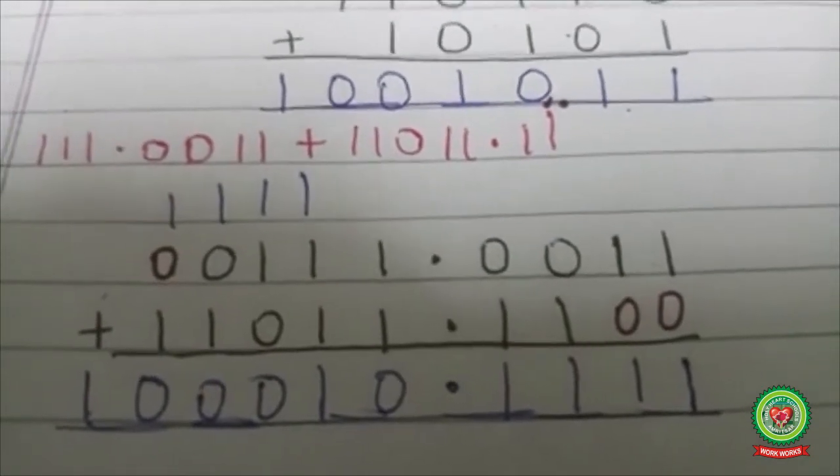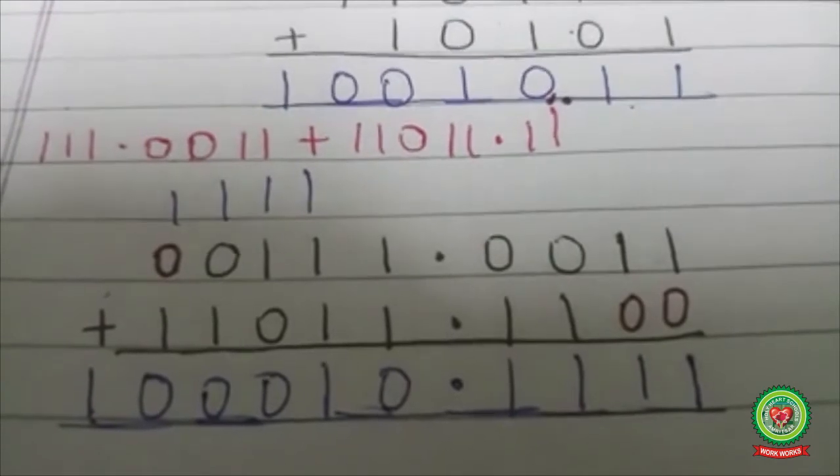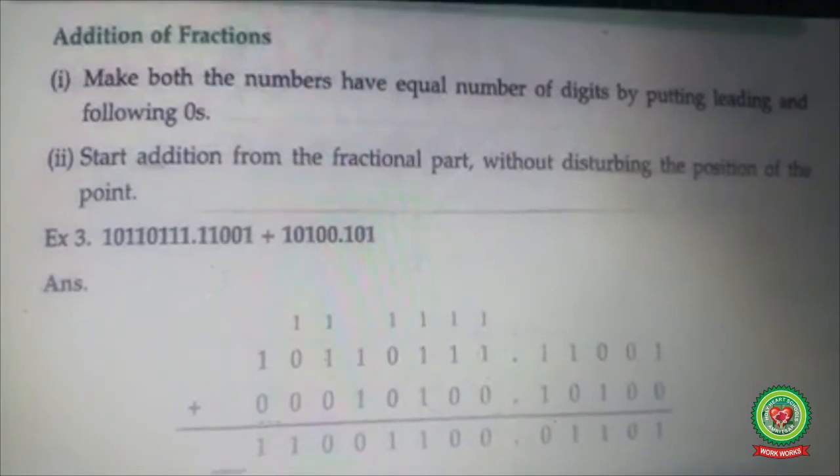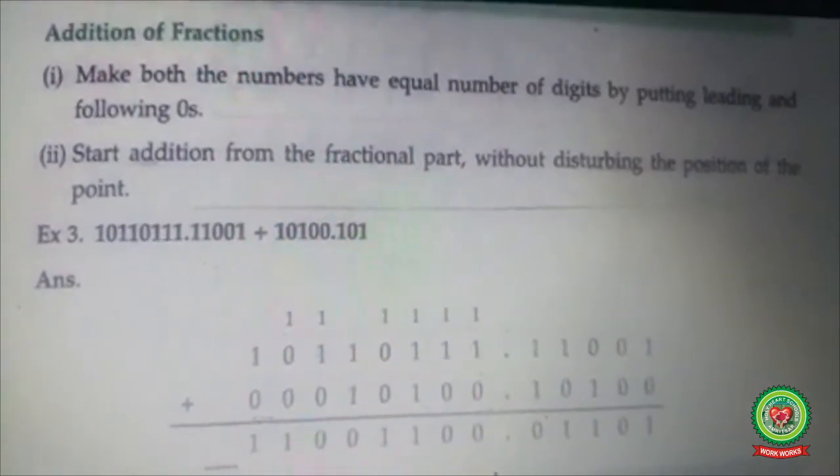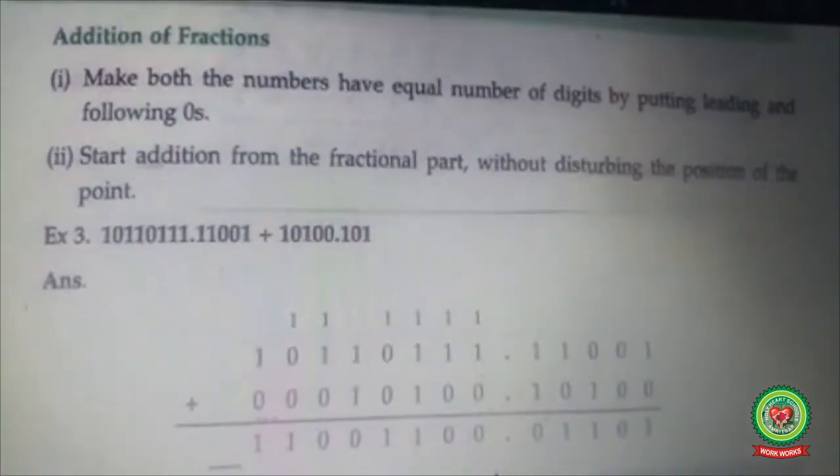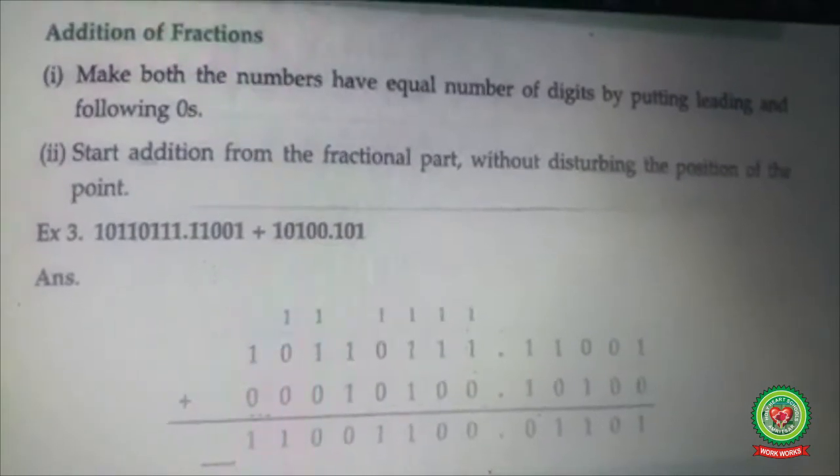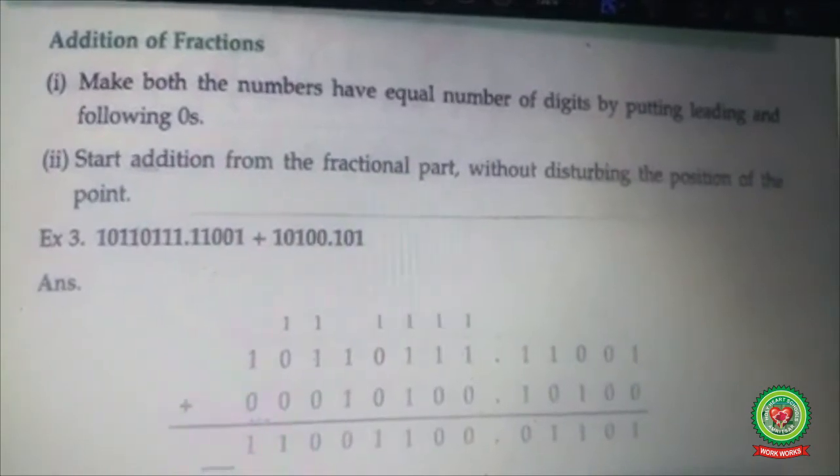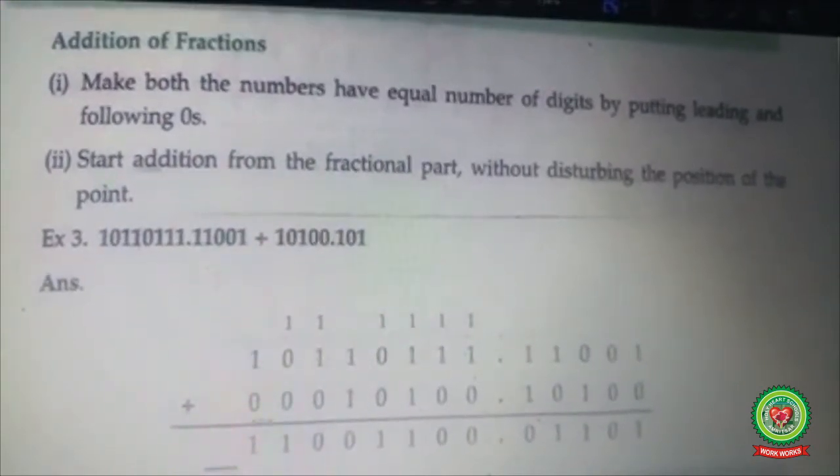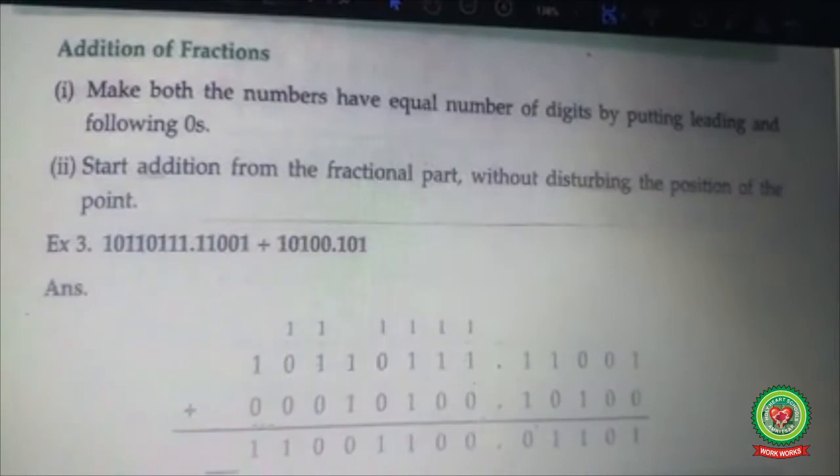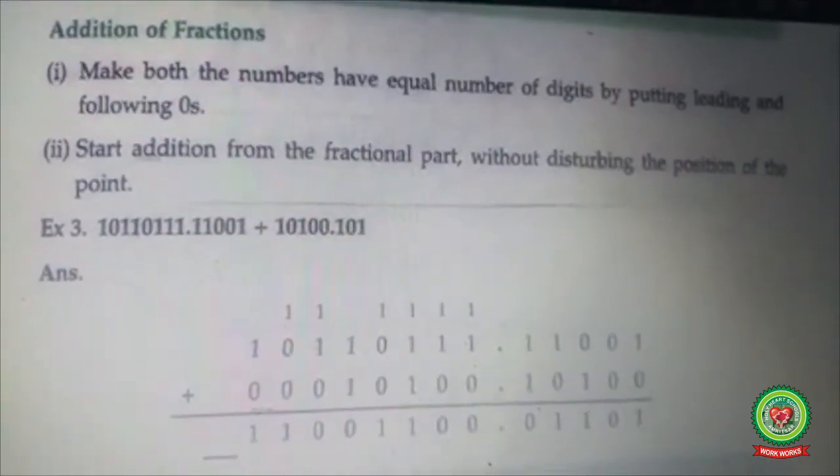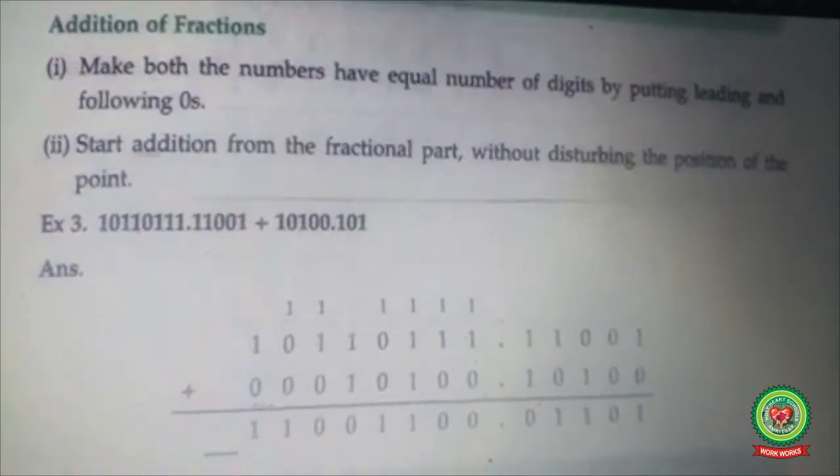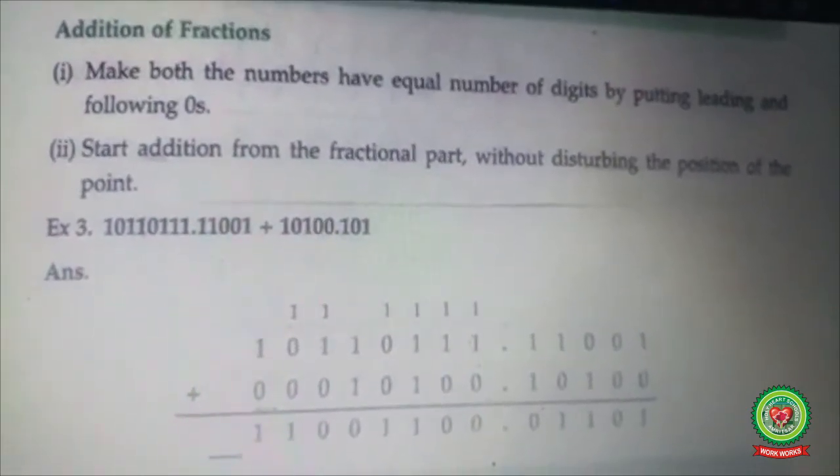Now let's see the next example of binary addition on fractions, meaning numbers with the decimal point. Students, please open page 35 of the book, addition of fractions. If both numbers are not equal, I will make them equal by putting leading and following zeros.